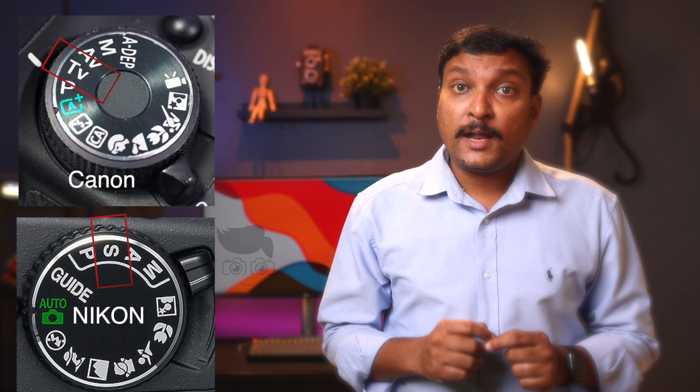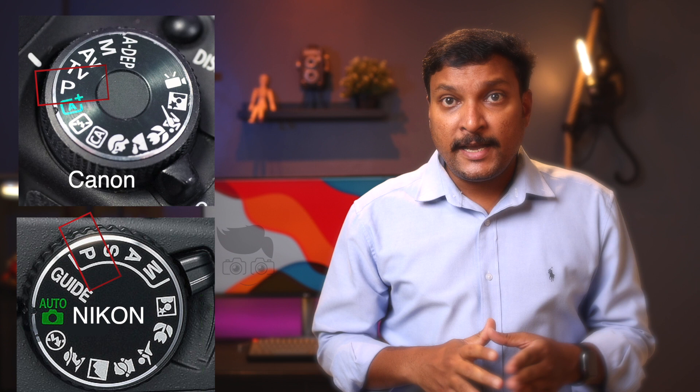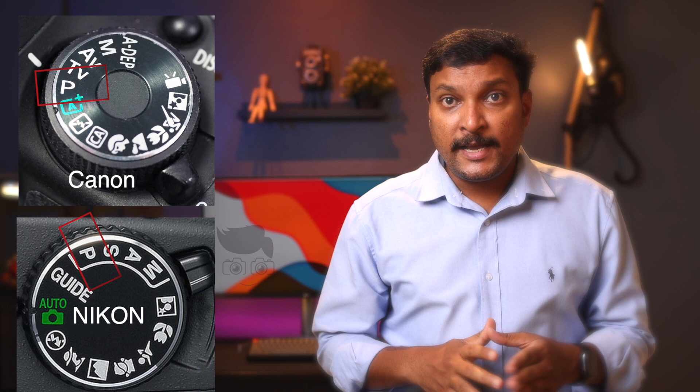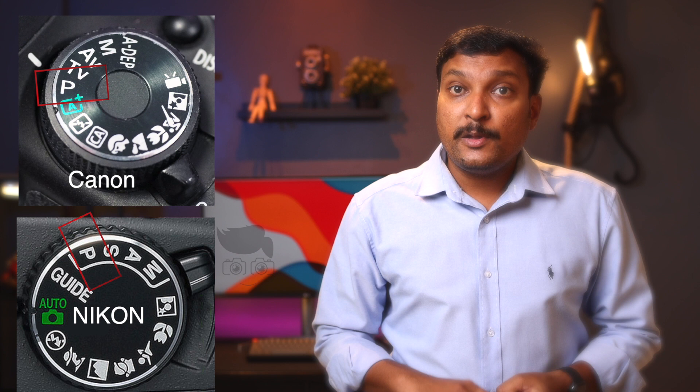The next mode is P mode — program mode. This is the same on both Canon and Nikon cameras. P mode gives you some automatic control with limited manual adjustment.